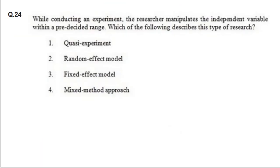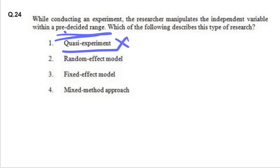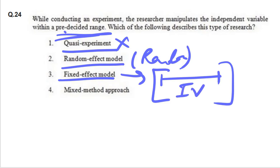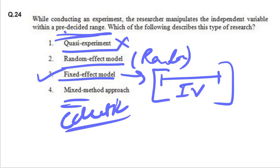While conducting an experiment, the researcher manipulates the independent variable within a pre-decided range — which of the following describes this type of research? Since there is a pre-decided range, it is a fixed effect model, because in a fixed effect model you can manipulate the independent variable within a pre-decided range. So the answer is option three. Mixed or eclectic approach means that all methods are used together.